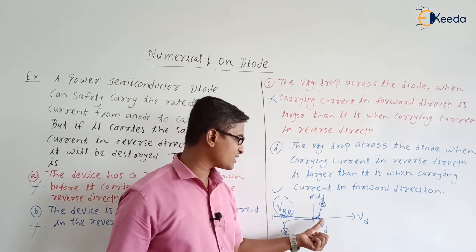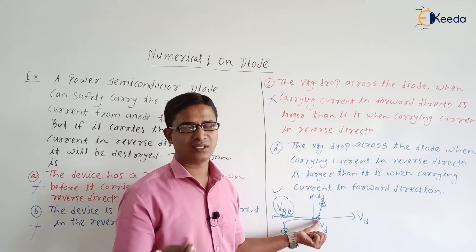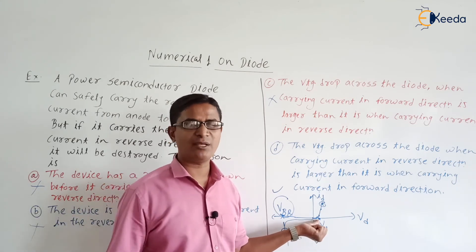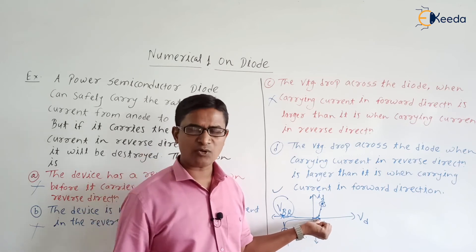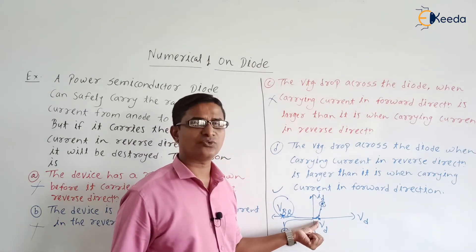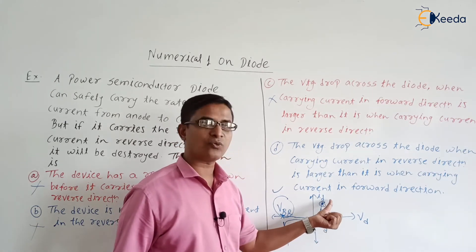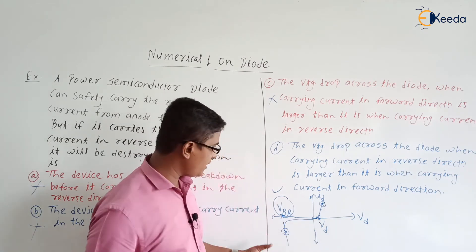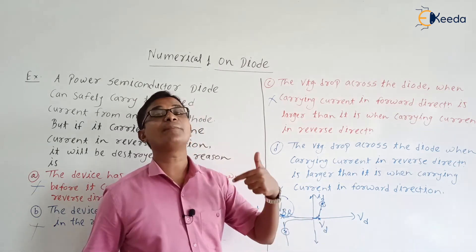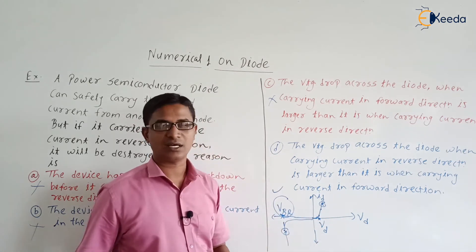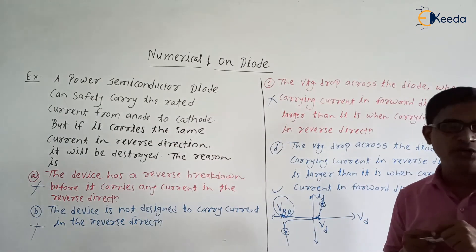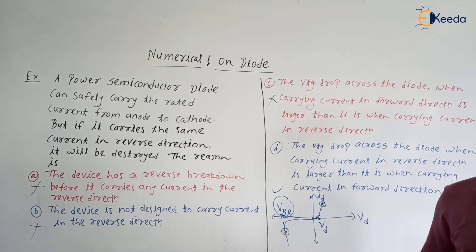When carrying current in the forward direction, the voltage drop is around 1 volt. For the power diode it is around 1 volt; for the silicon diode it is 0.7 volt; for germanium it is 0.3 volt; and in the case of a power diode it is around 1 volt to 1.5 volt. So this voltage is very low. Low voltage into high current means comparatively low power loss. But in reverse we have high current into high voltage, giving high power loss. High power loss causes high heat generation and the diode will be damaged permanently.